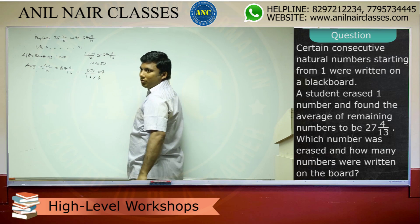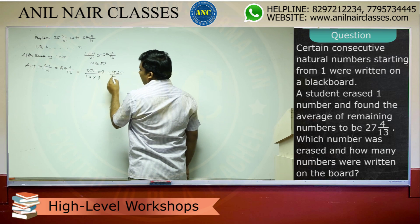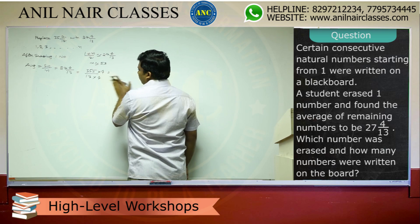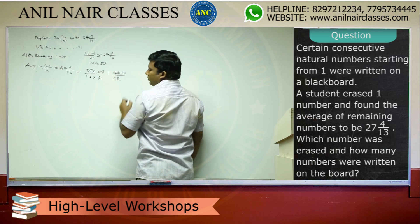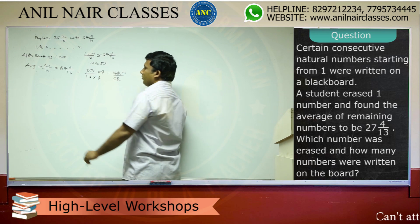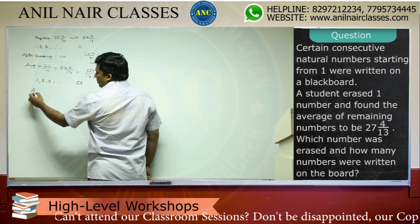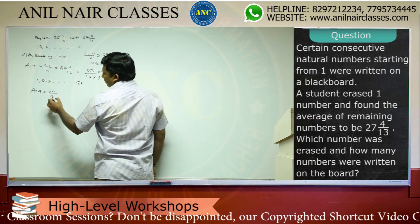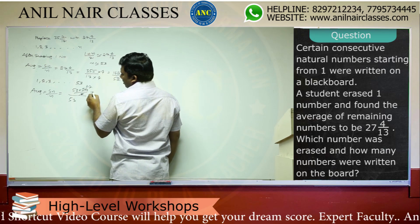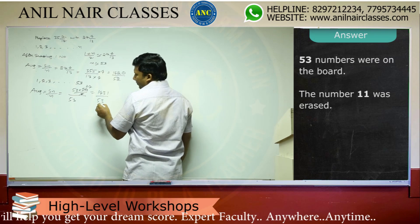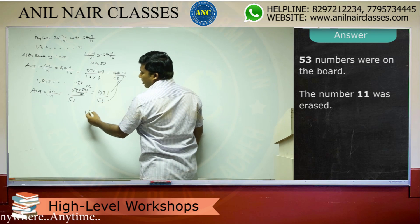So after erasing one number there are 52 numbers, meaning total numbers are 1 to 53. The average is SN / N for N = 53: sum = 53 × 54 / 2 = 1431. With 53 numbers becoming 52 after erasing, the sum decreases. The erased number is calculated from the difference between the original sum and the new sum (52 × average). The erased number can thus be determined from 1431 − (52 × 355/13).